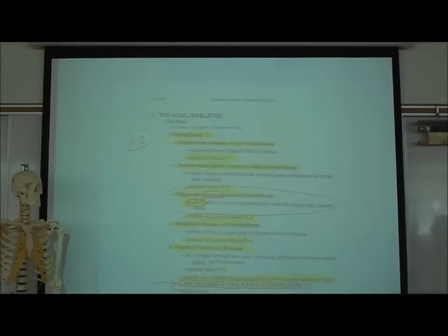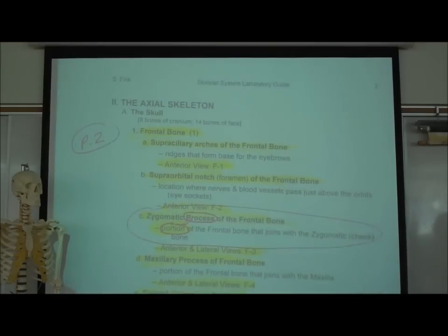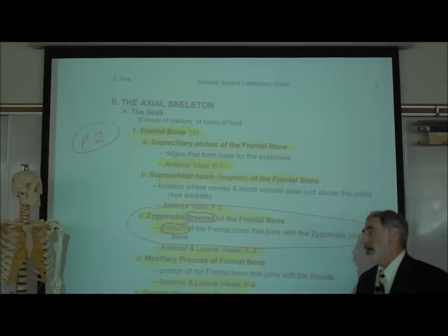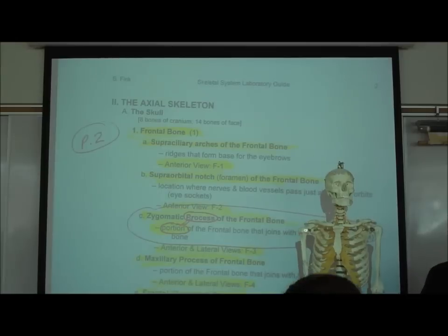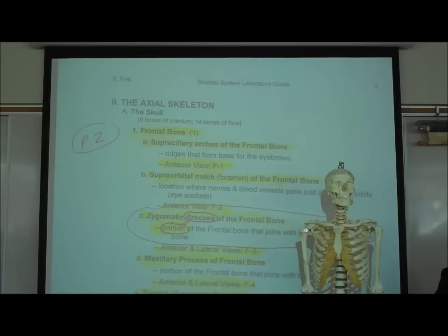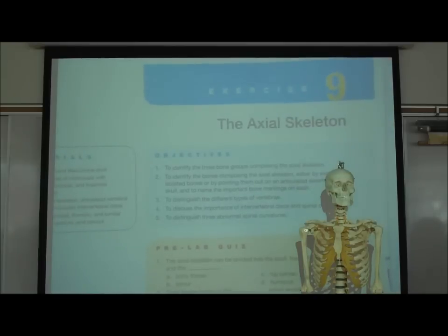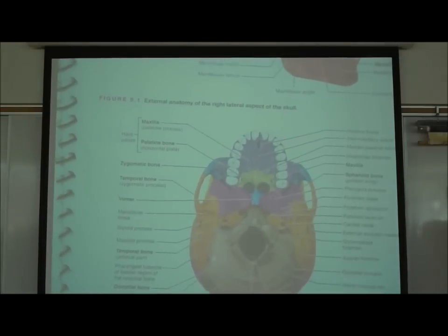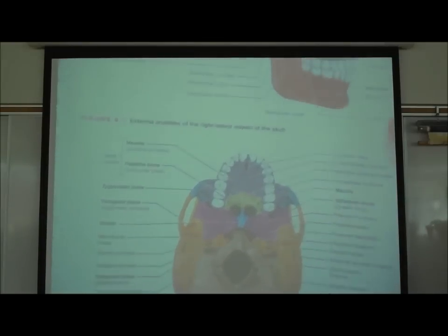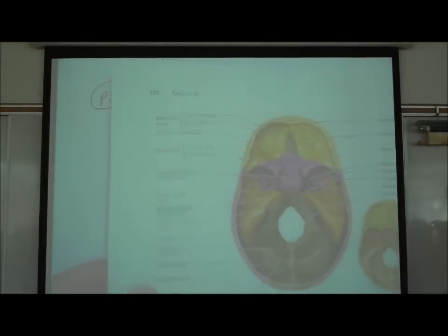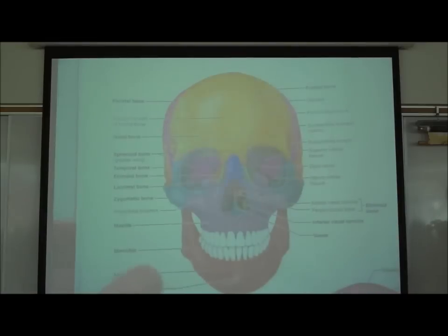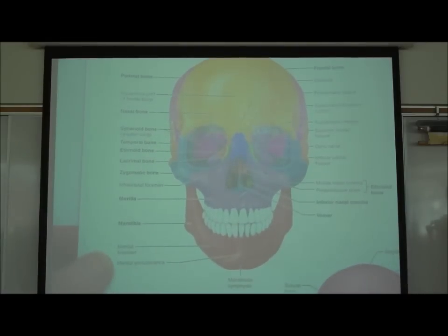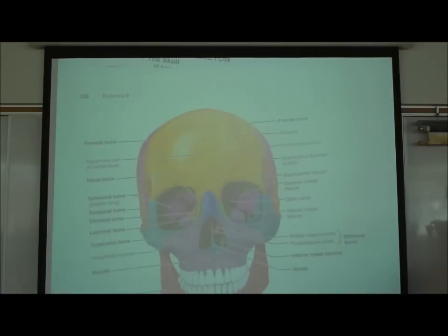On page two of our 22-page handout, the first thing listed is the frontal bone. The frontal bone is easy to know because it's right on the front of your skull. Another resource is your lab manual — no matter which edition — where you'll find exercise nine, the axial skeleton. It's got the lateral view, inferior view, figures 9.1 and 9.2, an internal view figure 9.3, and an anterior view. You're going to use these pictures to help you find structures, and they're in multiple colors to make it easy.